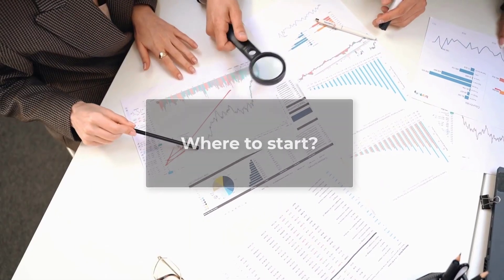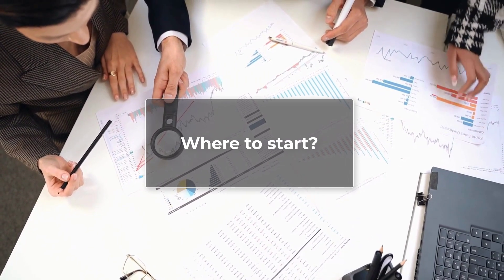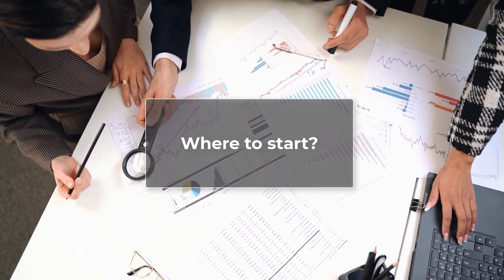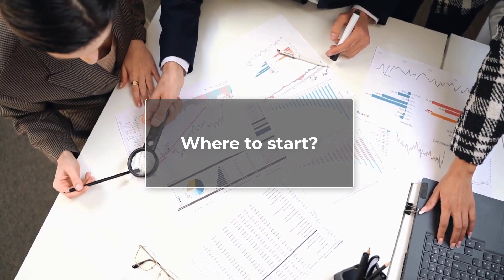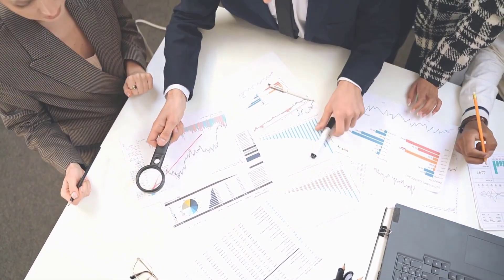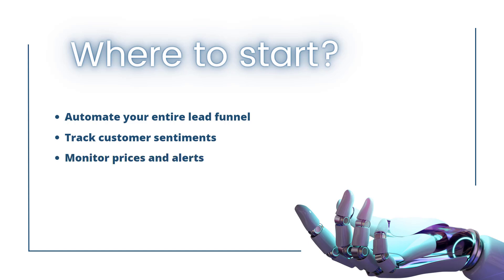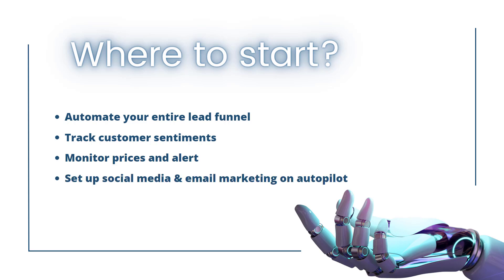Where to start? To truly leverage the power of technology in your business, consider incorporating AI and machine learning systems. Octoparse RPA can help enhance efficiency and productivity in several key areas: automate your entire lead funnel, track customer sentiments, monitor prices and alerts, set up social media and email marketing on autopilot, and ditch the manual data entry.